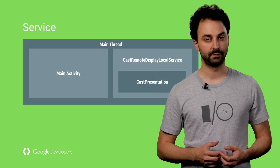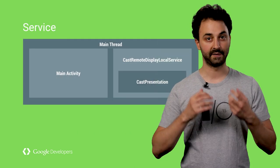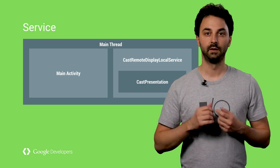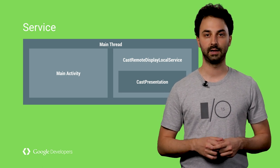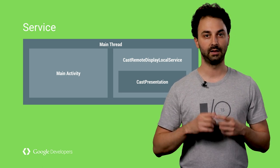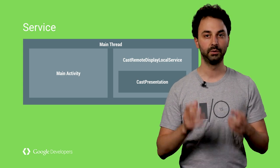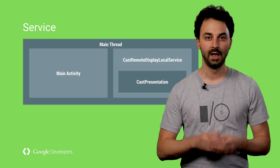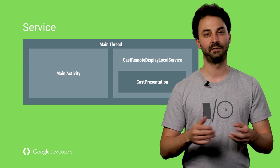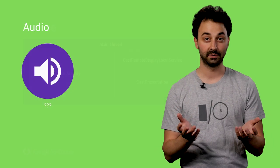Finally, the Remote Display APIs provide a local Android service to keep rendering even while your main Android activity is backgrounded. This also makes it possible to control your game with a Bluetooth controller while the mobile device sits on the player's coffee table. As for audio, you don't have to do anything — Remote Display automatically mirrors the device's audio when your game is in the foreground.